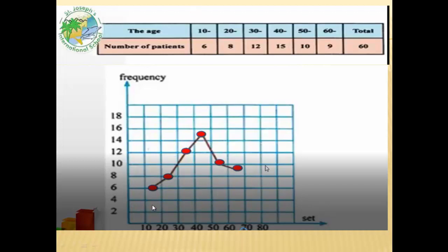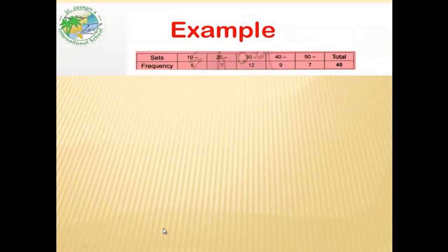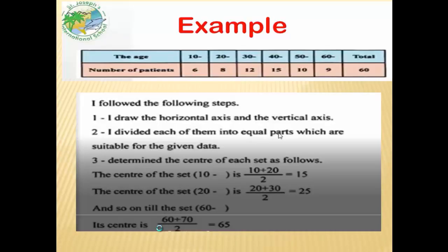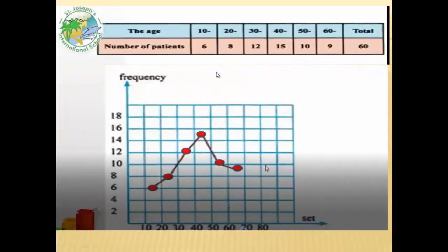Now from the last page we determined the center of each one. The center of the set equals 10 plus 20 over 2 equals 15. Now here at 15, between 10 and 20, we plot 15 at this point at frequency 6. From 25, and between the 20 and the 30, 25, at 25 from the x-axis, go to y-axis at 8. We determine the point.